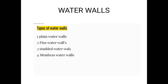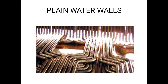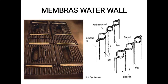Plain water walls — as the name suggests, plain means smooth. These are simply a bundle or wall of plain, smooth boiler tubes. If the furnace wall is constructed with these plain tubes, it is called a plain water wall. It is quite simple.